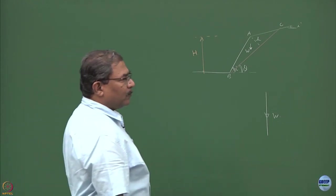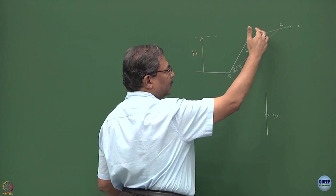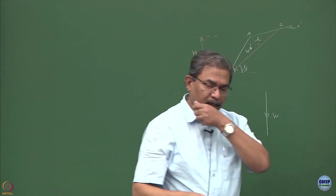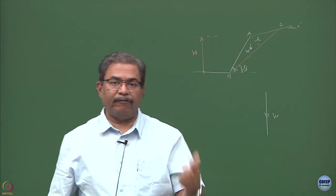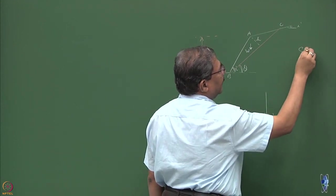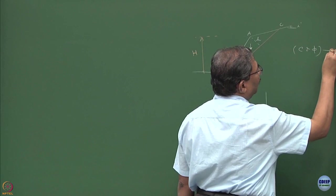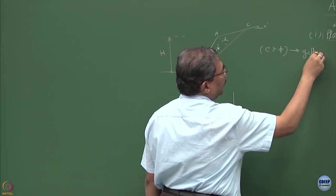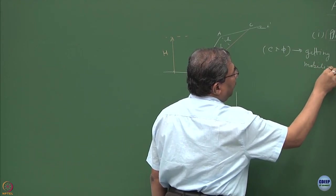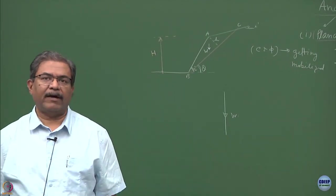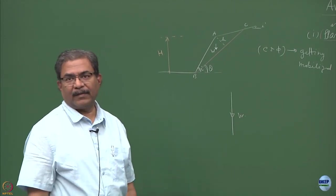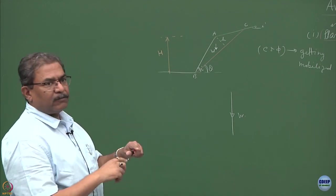What are the other forces which are going to act on this? Given a chance, the entire soil mass or the slope would have a tendency to slide down and this is what is being protected by C and phi which is getting mobilized in the system. So this is the first time I am writing C and phi which are getting mobilized.